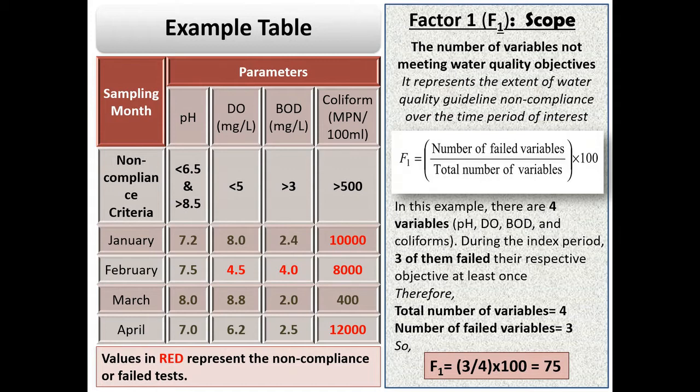In order to comply the guideline, the measured value of pH should be between 6.5 and 8.5. The value of DO should not fall below 5 mg per liter. The value of BOD should not exceed 3 mg per liter. And coliform count should not exceed 500 MPN per 100 ml.